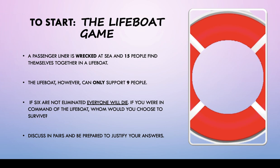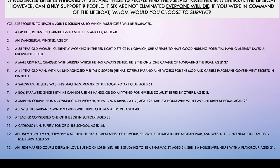This is more of a philosophical question than anything else. Pause the video. So, a passenger liner is wrecked at sea and these 15 people find themselves together in a lifeboat that can only support nine people. If six are not eliminated, everyone will die. If you were in command of the lifeboat, whom would you choose to survive? You are required to reach a joint decision as to which passengers will be eliminated — do this with a family member or friend. You've got 13 different types of people with different types of jobs and skills. I want you to sift out the six you think may not necessarily be needed if you were to end up on an island.